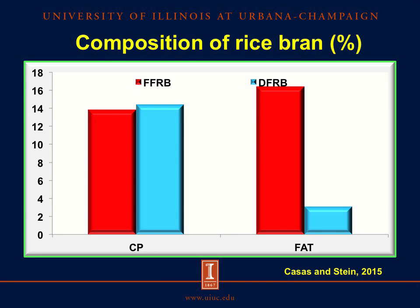The nutritional composition of rice bran makes this ingredient an important source of energy and crude protein for pigs. This graph shows the concentration of crude protein and fat in these ingredients. The red bar represents full fat rice bran and the blue bar represents defatted rice bran. The concentration of crude protein is about 15% in these coproducts, but the concentration of fat is 16% in full fat rice bran and just 2 or 3% in defatted rice bran.